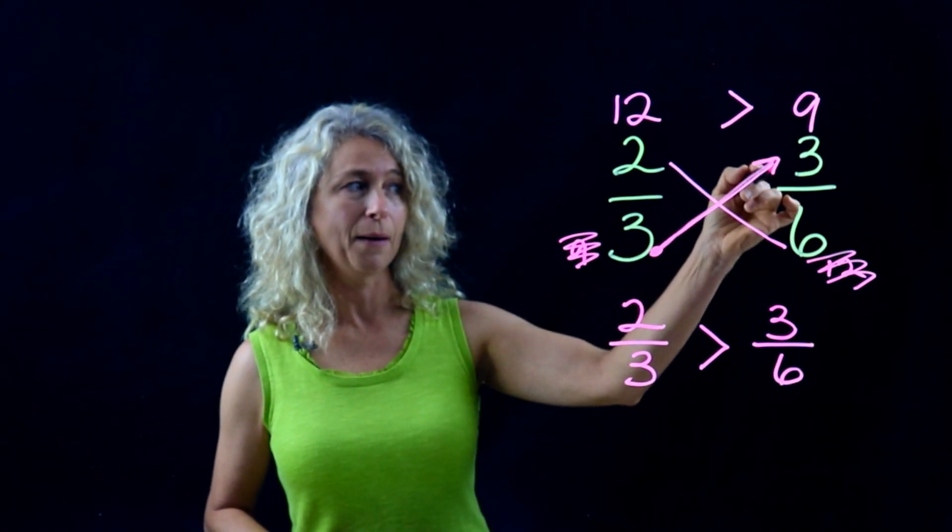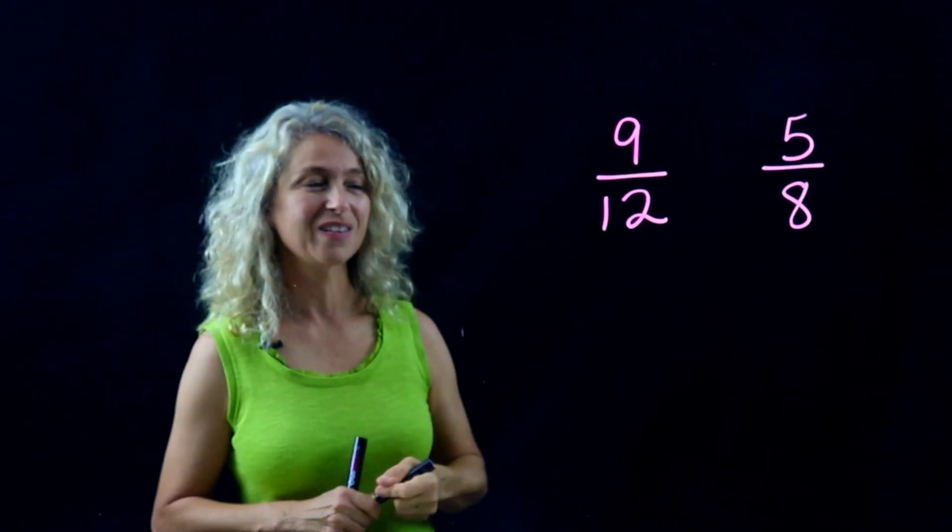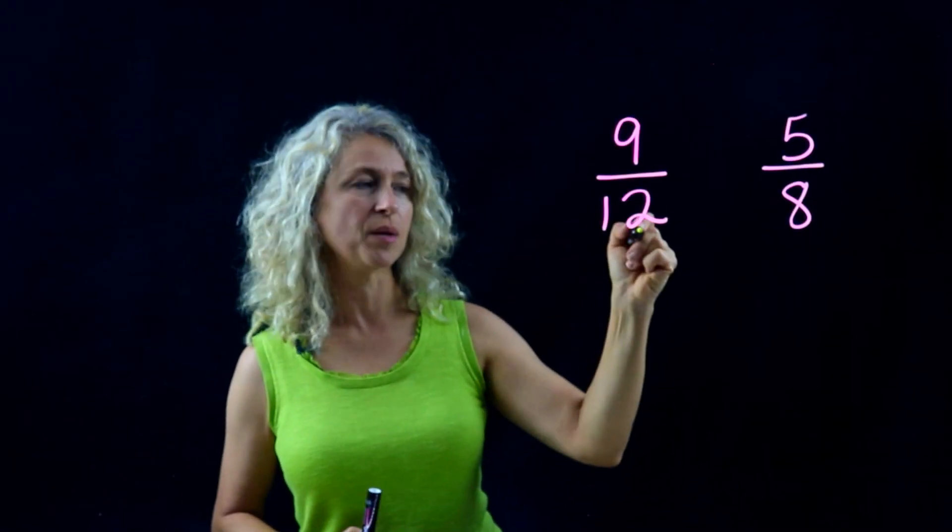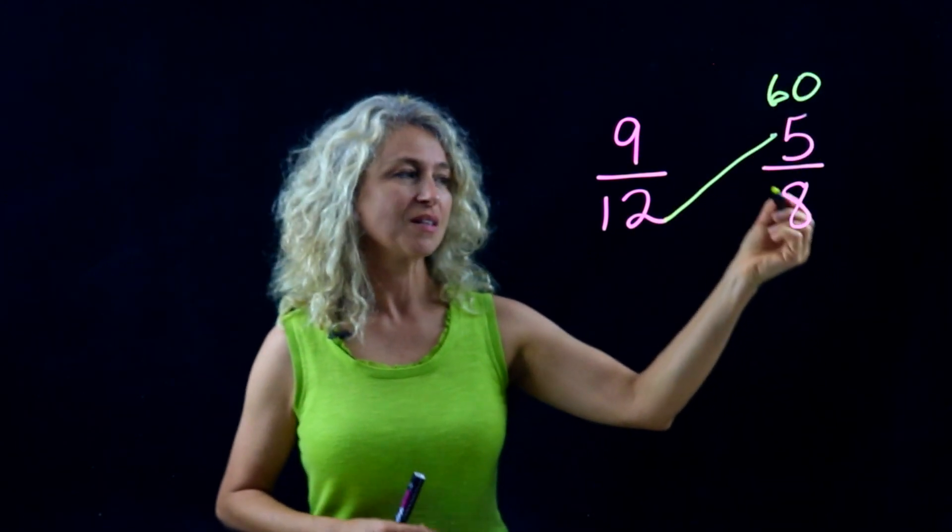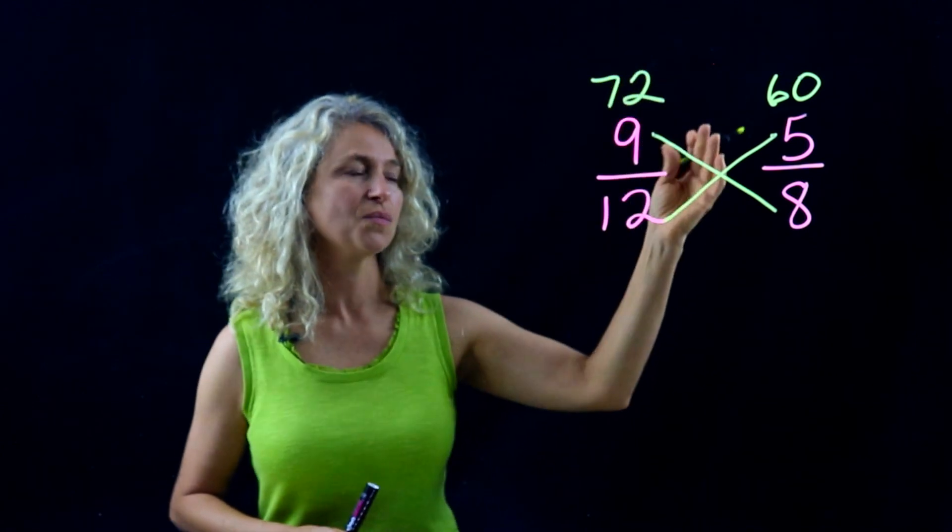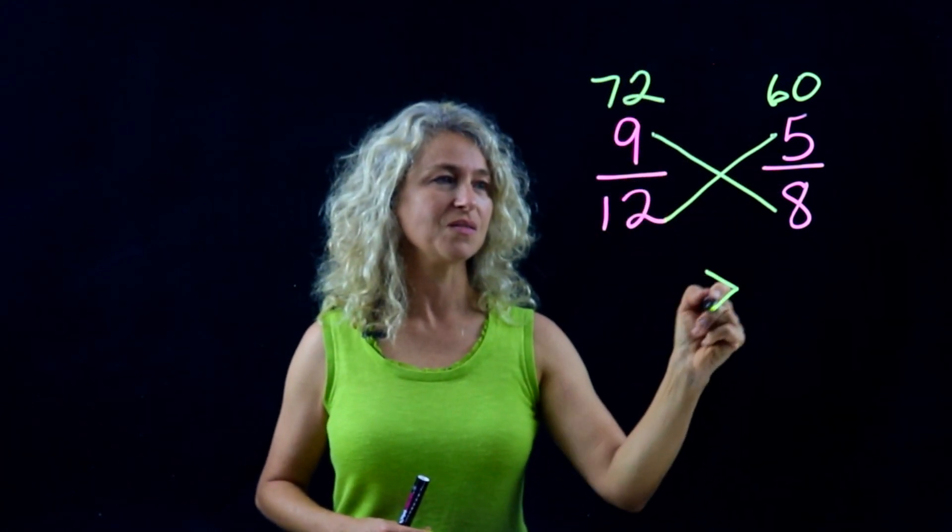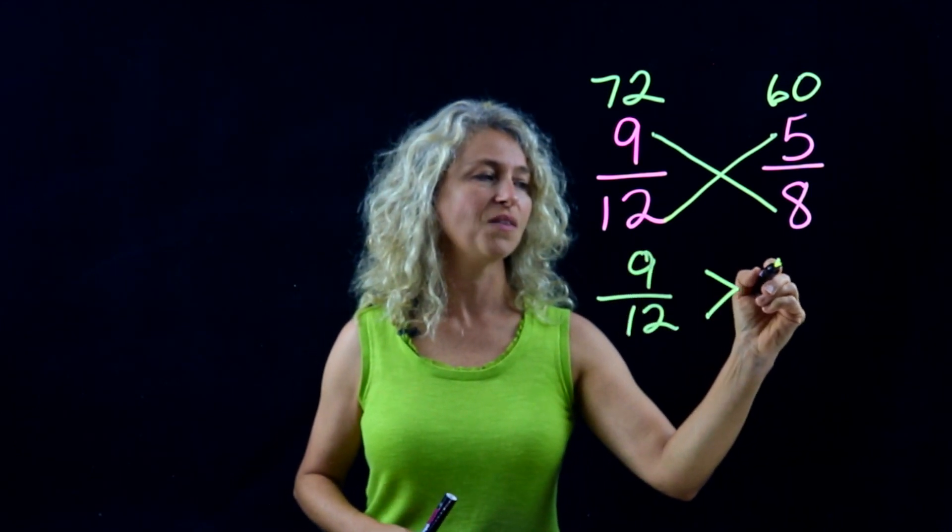Starting at the denominator: twelve times five is sixty, eight times nine is seventy-two. Which one is greater? Nine-twelfths is greater than five-eighths.